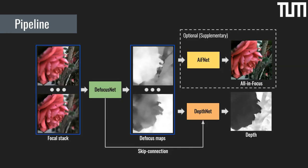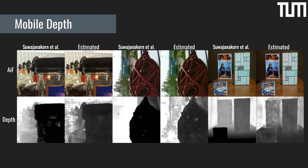We use permutation-invariant networks to first estimate a defocus map and then a depth map. These networks allow us to compare between different input images to estimate the amount of blur, in order to determine the defocus and depth maps. We show that using such networks and having an intermediate representation like defocus helps to generalize to real data.